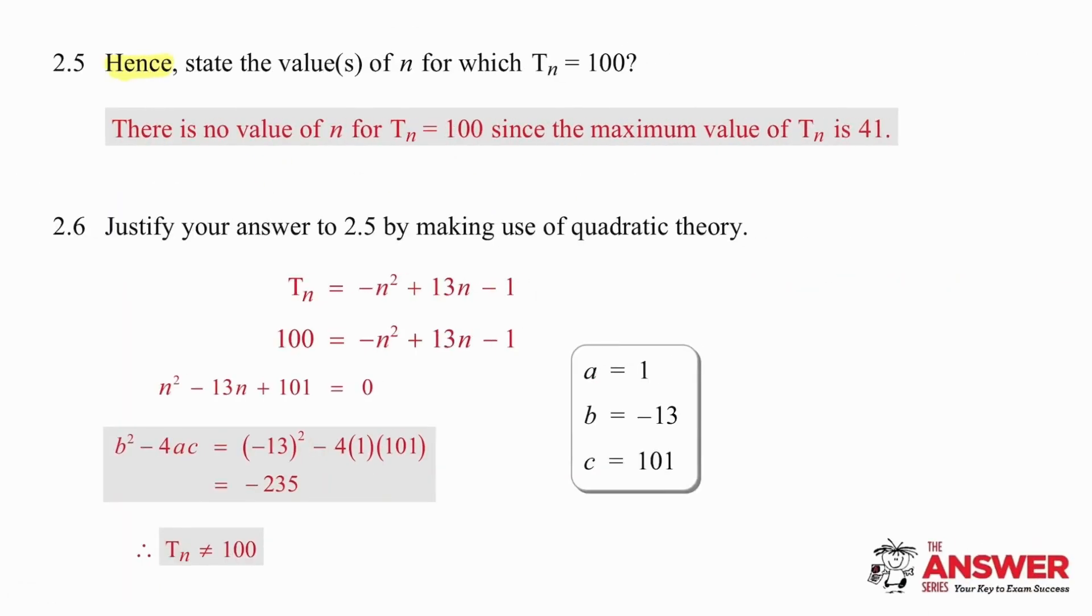Hence is a big hint. It means that we are going to use what we have just done to work out the values of n for which T_n is equal to 100. Now, you should be thinking about this and saying, hang on, what are they talking about? We've just worked out the fact that T_n is 41, is the maximum value. So how can they ask us to find the position of a term that produces a value of 100?